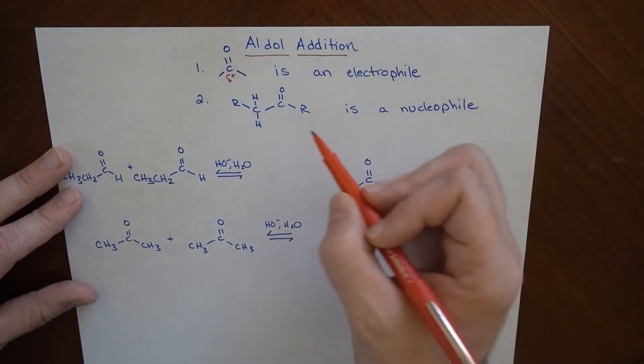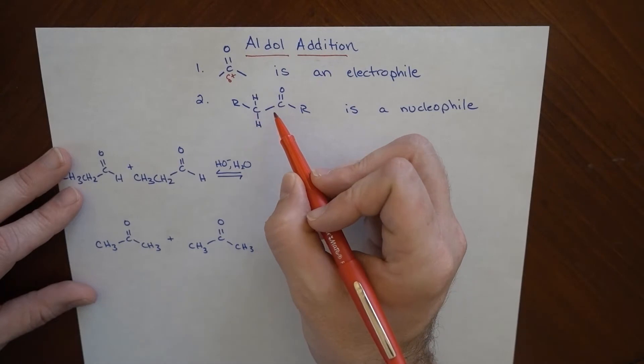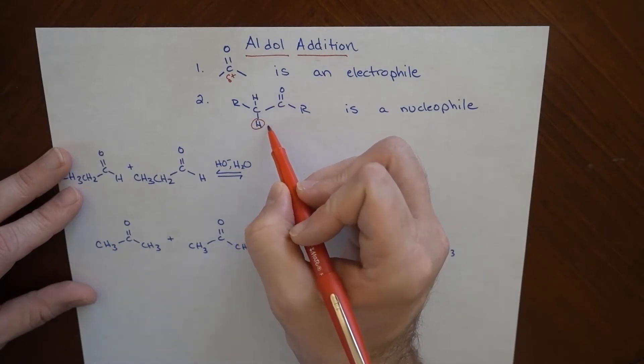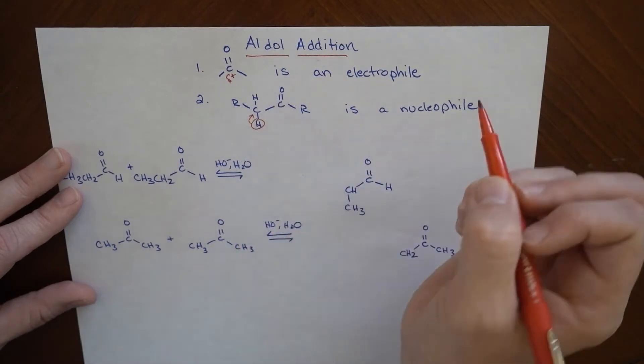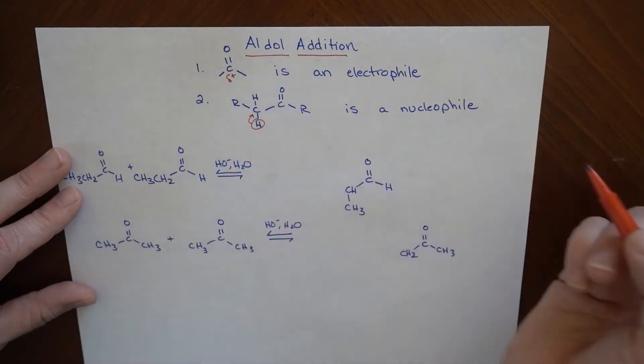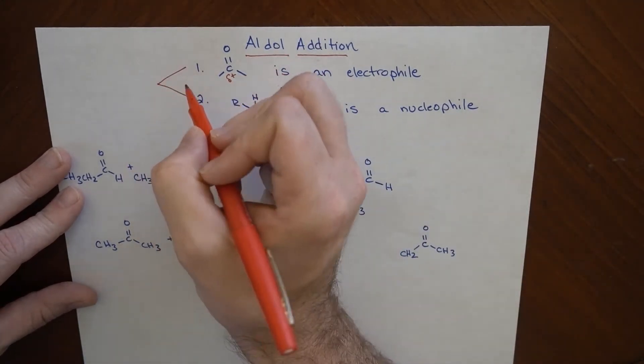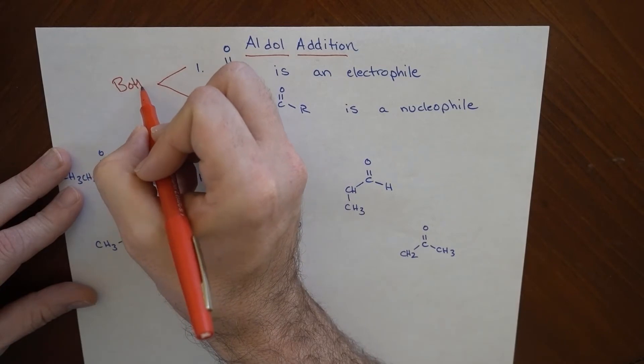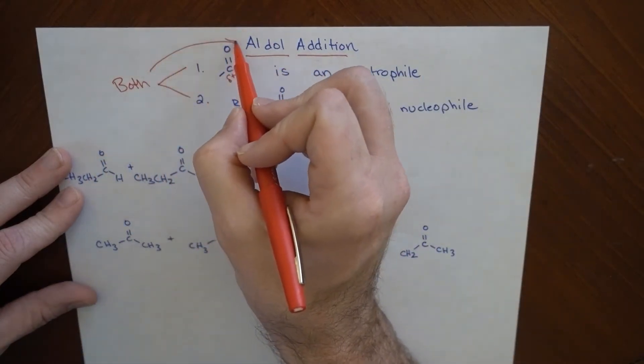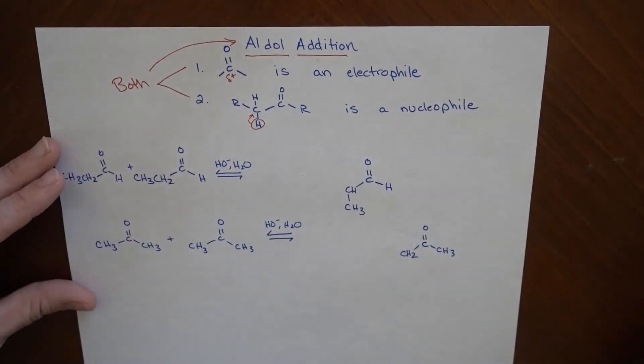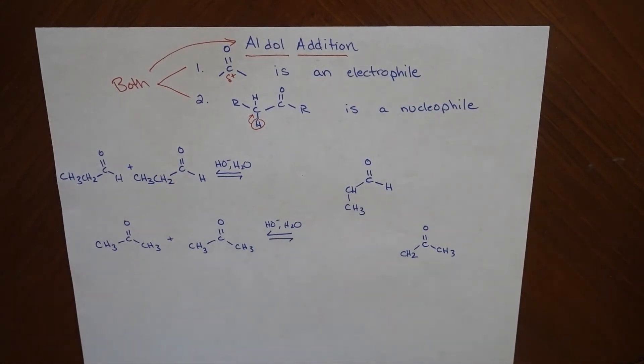The other thing that's important here is that the alpha carbon, once this is removed and the electrons kick up to here, this species becomes a nucleophile. And when both of these occur, that's when we get an aldol addition. That is, we take two smaller molecules and make a bigger molecule out of it.